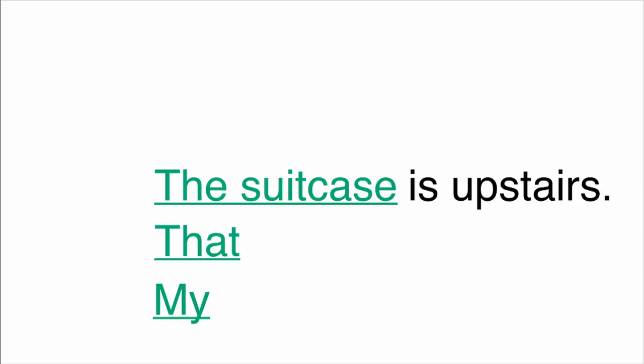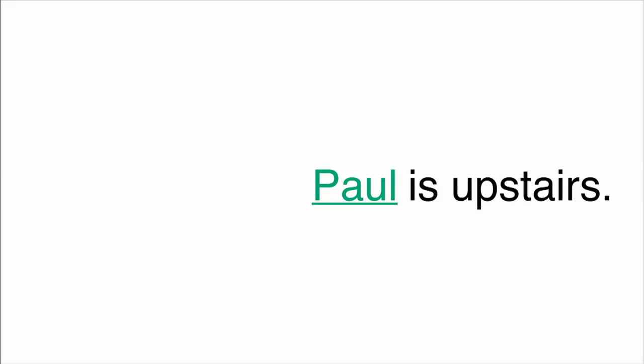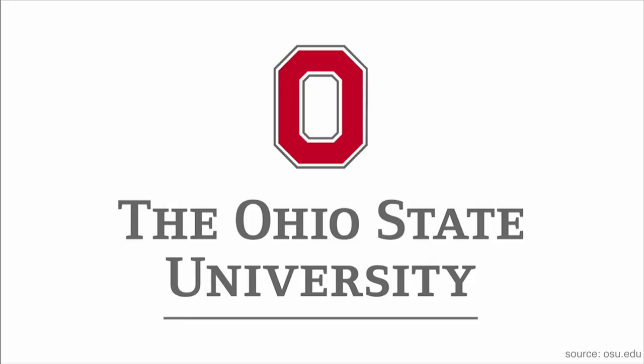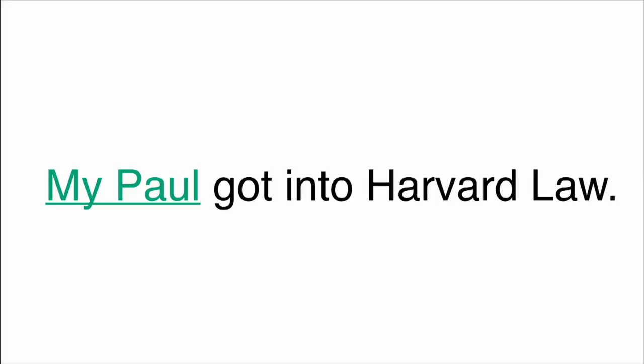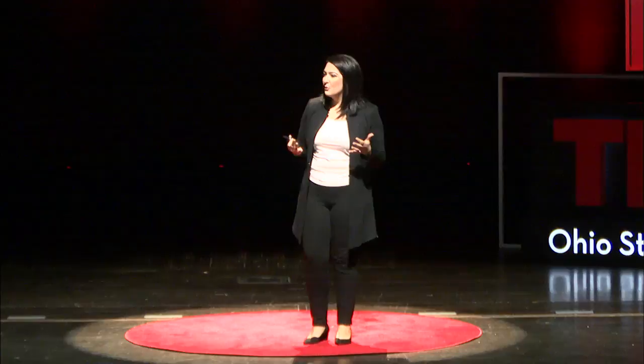Now, when we talk about people and use their names, we're inherently talking about particular people. So in English, I can say 'Paul is upstairs' and that's a good sentence — I don't need a determiner there. However, across languages and including in English, we can and do find determiners with people's names. We can say 'the Paul McCartney is upstairs', or 'the Ohio State University', or 'my Paul got into Harvard Law', or 'that Paul got into Harvard Law'. But a native speaker understands that 'my Paul' means more than just the Paul I possess, and 'that Paul' means more than the one over there.